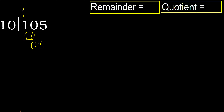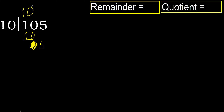Next. Bring down 5. 5 is less, therefore next. There is no more number, therefore finished. Therefore complete — always complete with 0. Complete because here we finished with this number.